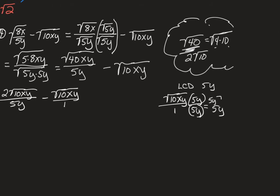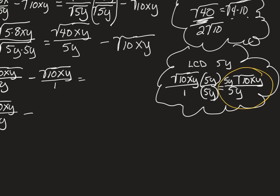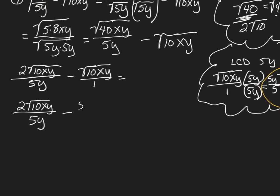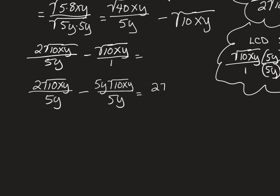And that will give me 5y square root of 10xy over 5y. This makes this whole thing equal to 2 square root of 10xy over 5y, and I'm subtracting from that my equivalent fraction, 5y square root of 10xy over 5y. This will become, then, 2 square root of 10xy minus 5y square root of 10xy all over the same denominator, 5y.